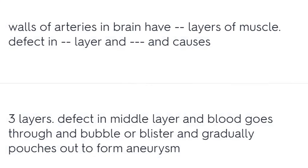The walls of arteries in the brain have three layers. A defect in the middle layer allows blood to go through and form a bubble or blister that gradually pouches out to form an aneurysm.